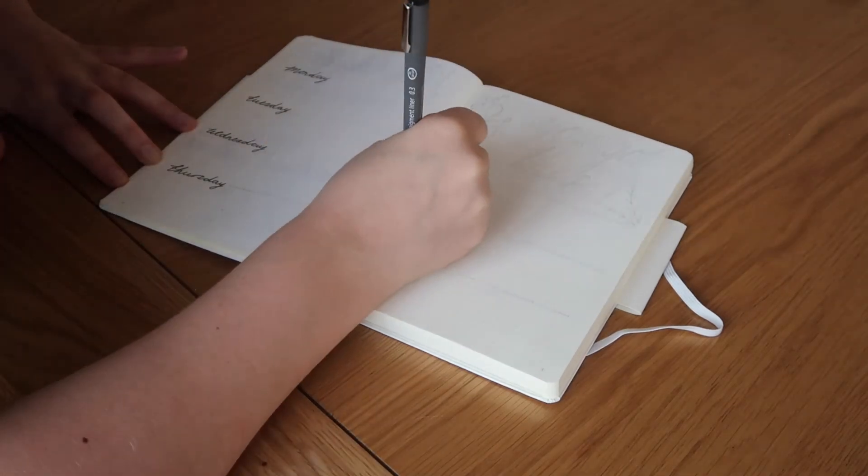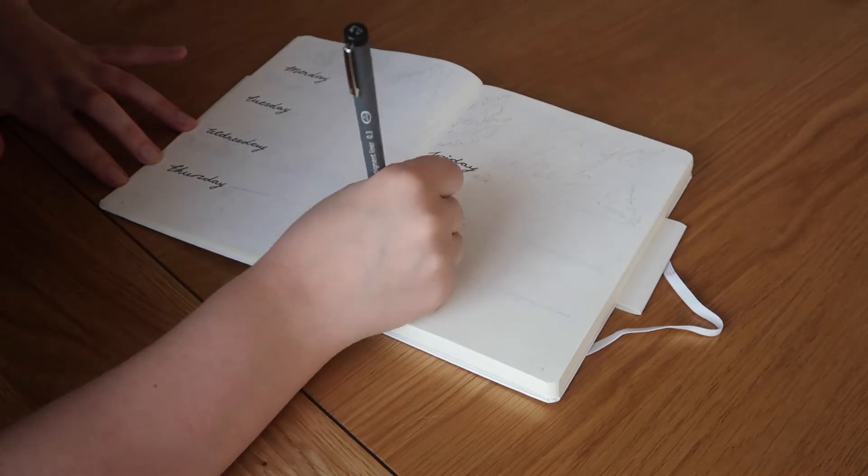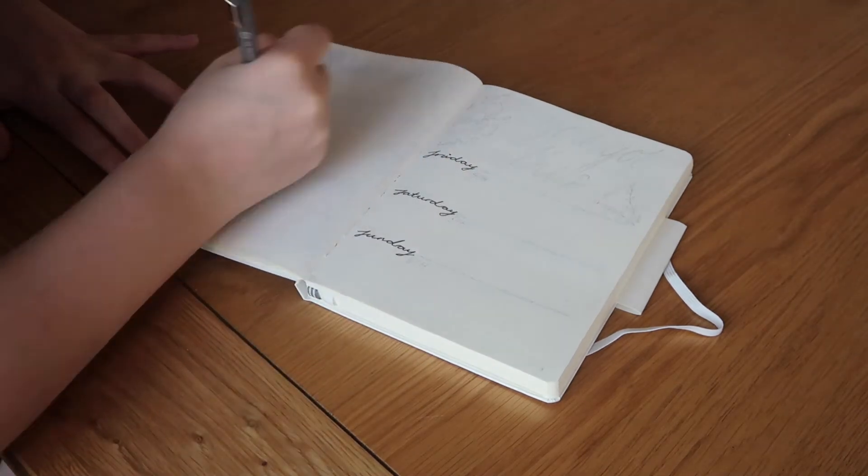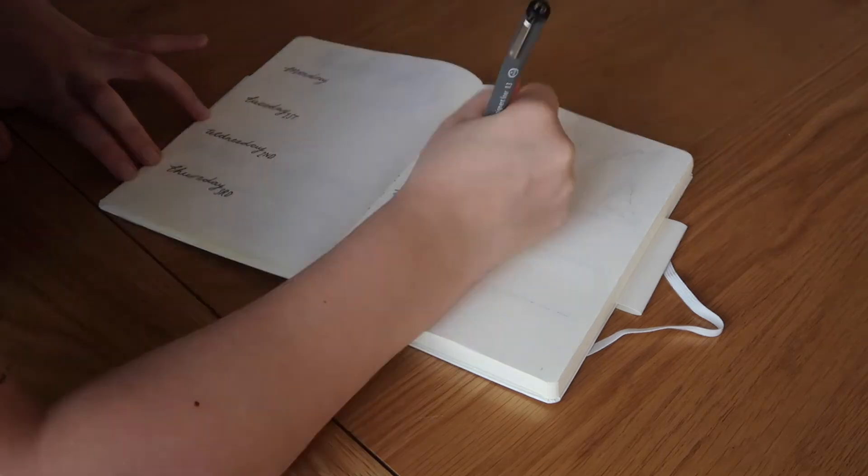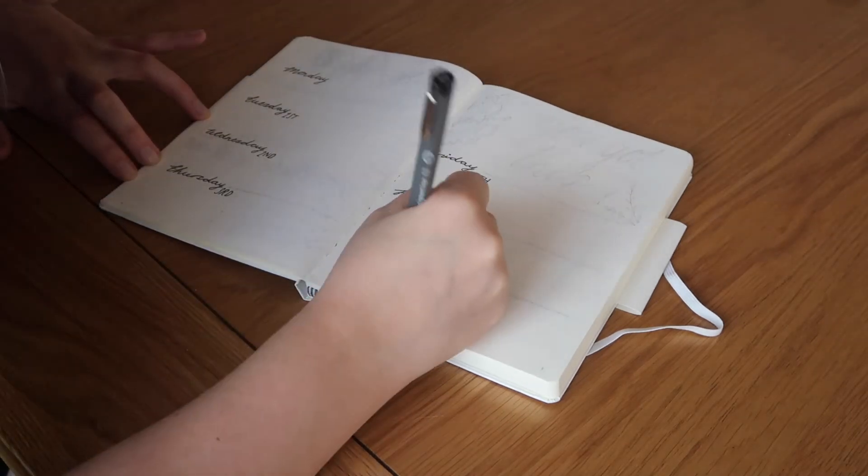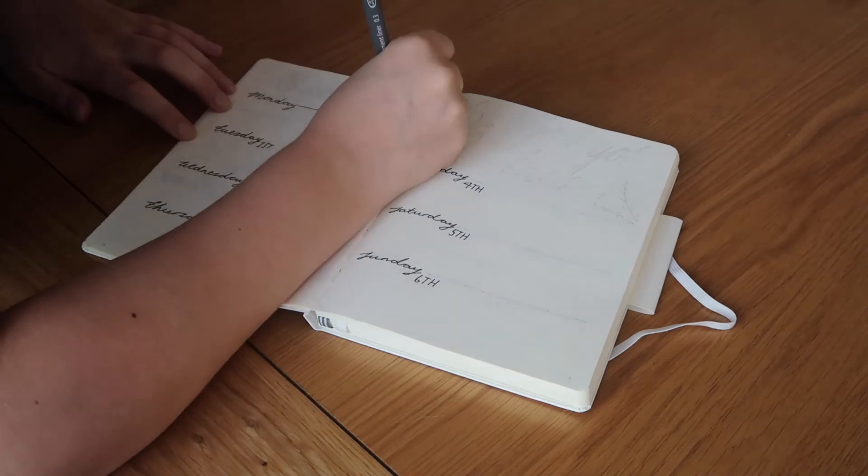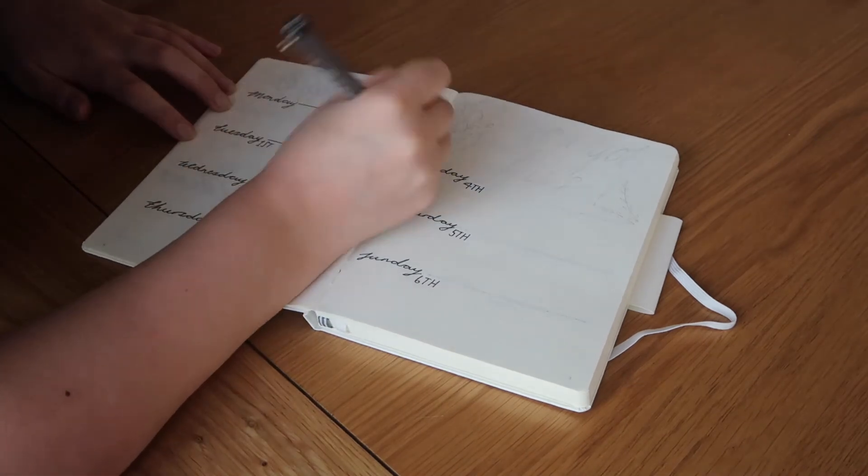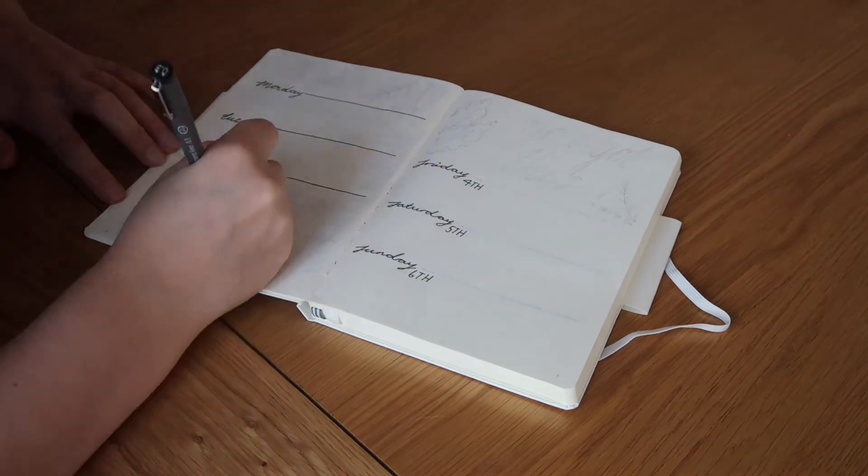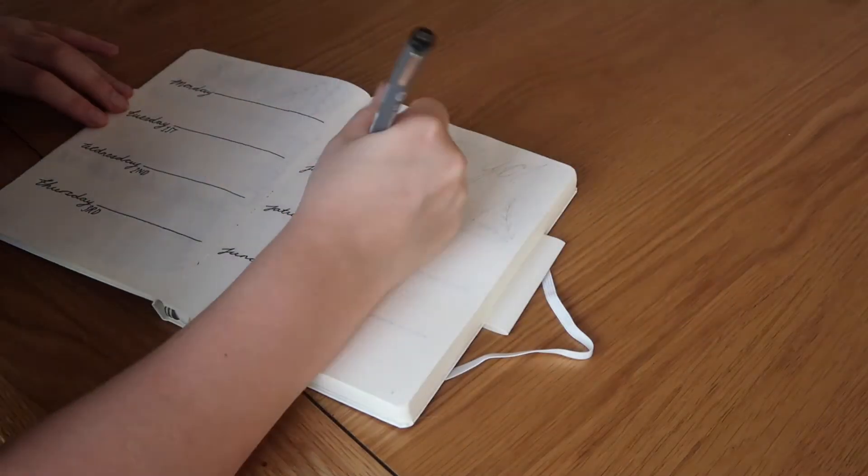But basically I did the days along the sides of the pages and then I just did the little dates so you know obviously what date it is. And then I filled the rest of it with a line so that it just separates each section and looks really, really neat.